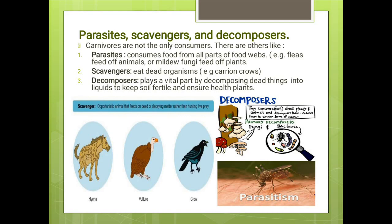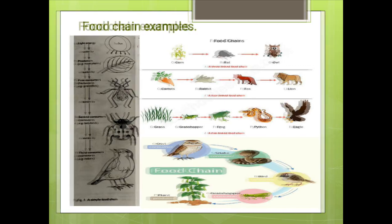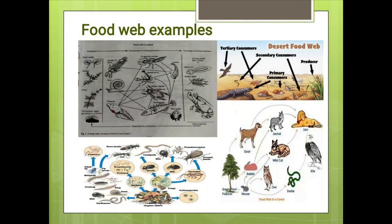Here are some examples of food chains — if you focus on them, you can see how they maintain a simple linear network. And here are some examples of food webs, such as those found in a pond, a desert, or a forest, showing how all consumers feed on each other without maintaining any linear network.